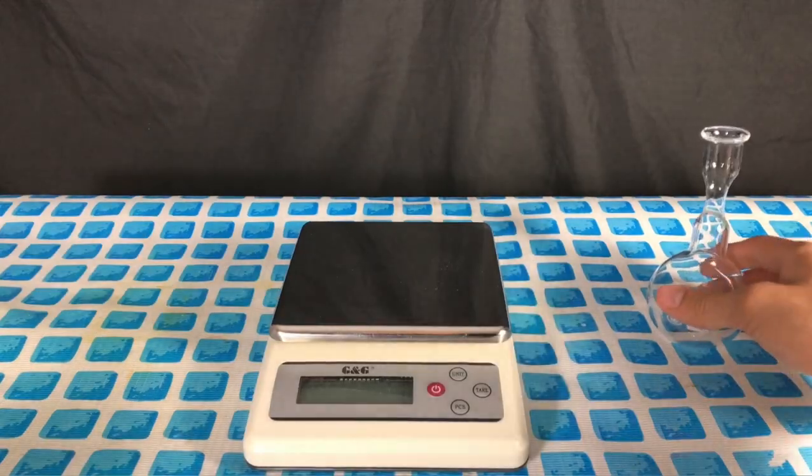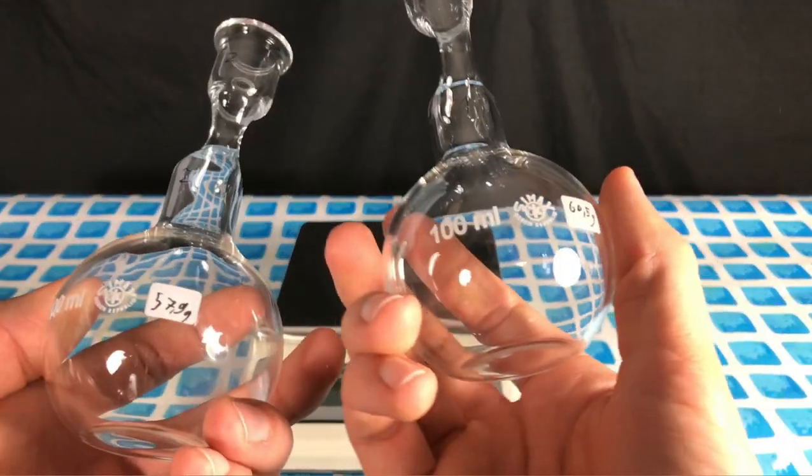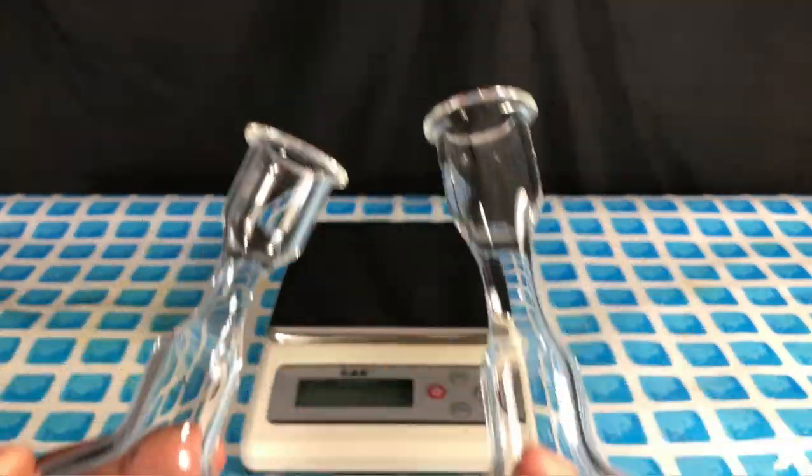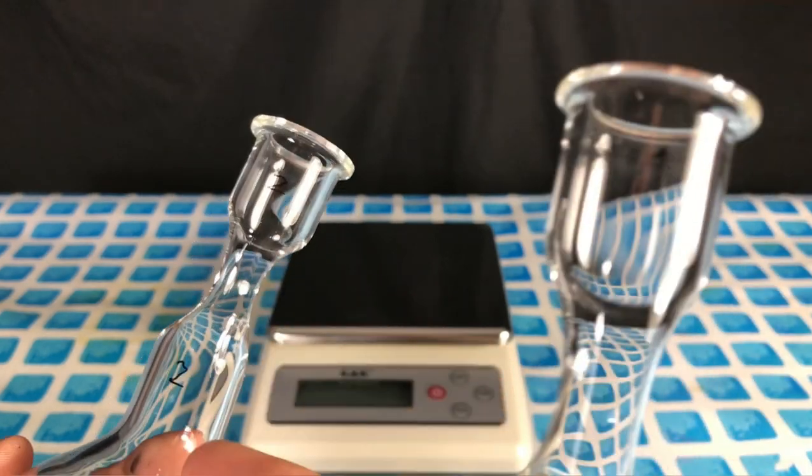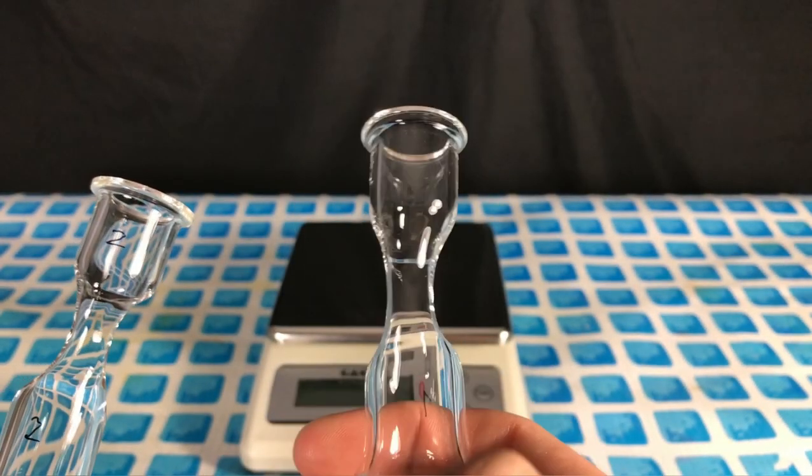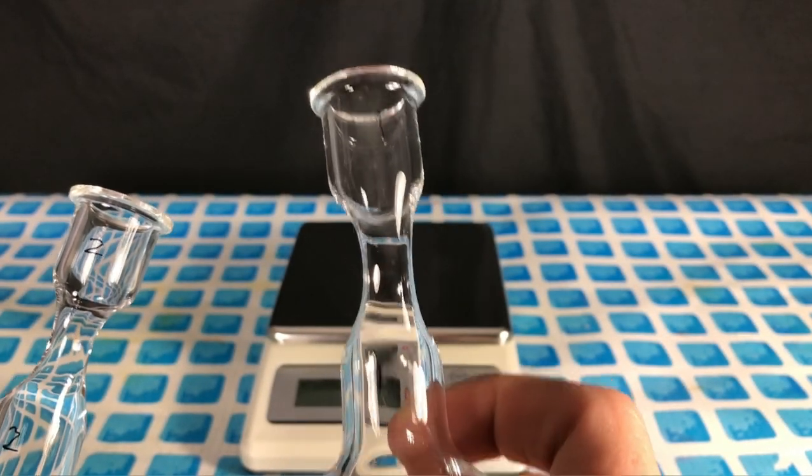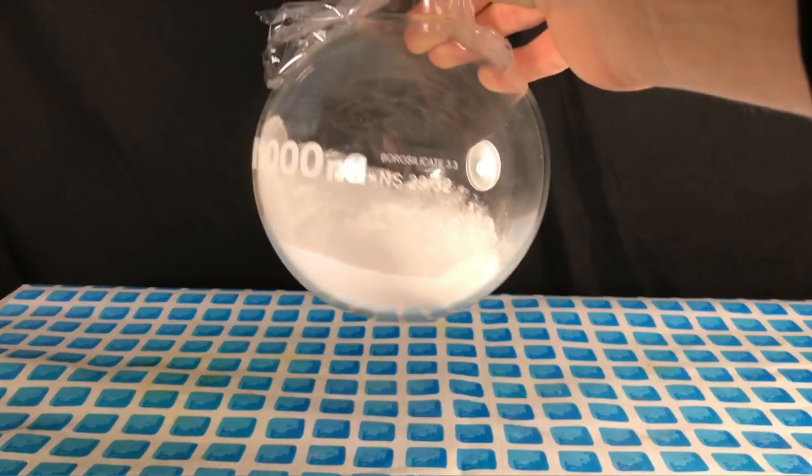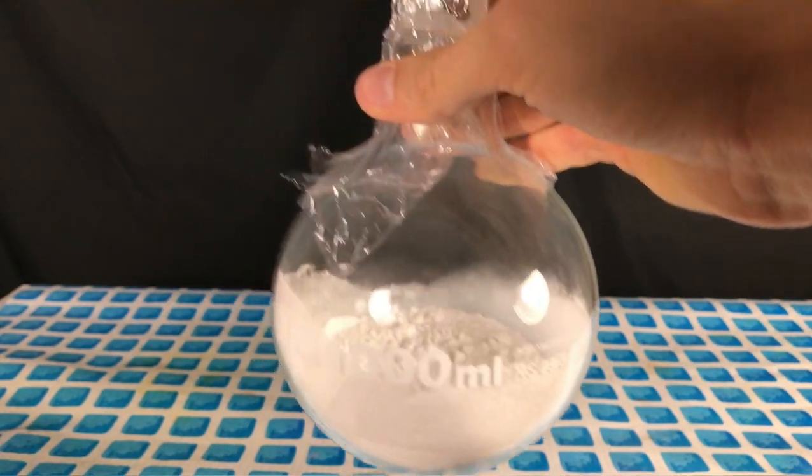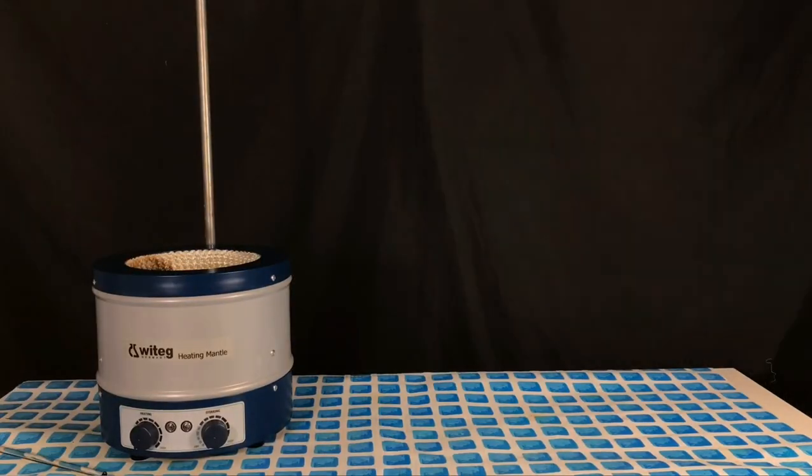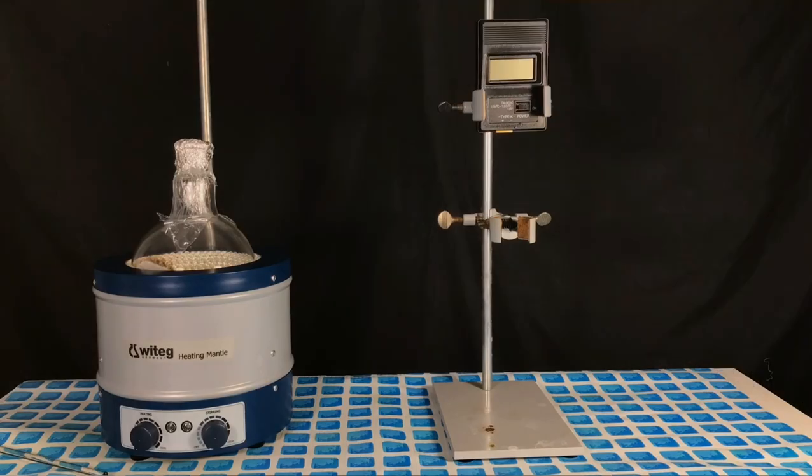Because we wanted to be able to determine the yield later on, the flasks were weighed and labeled in advance. The neck belonging to the flask was also labeled. 150 grams of phosphorus pentoxide were weighed out in advance. They were weighed out directly in this round bottom flask. Then we started with apparatus assembly.